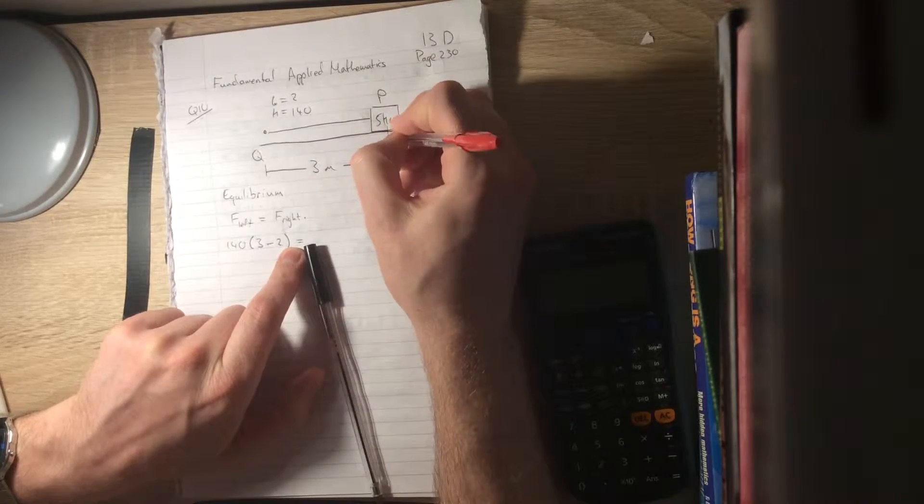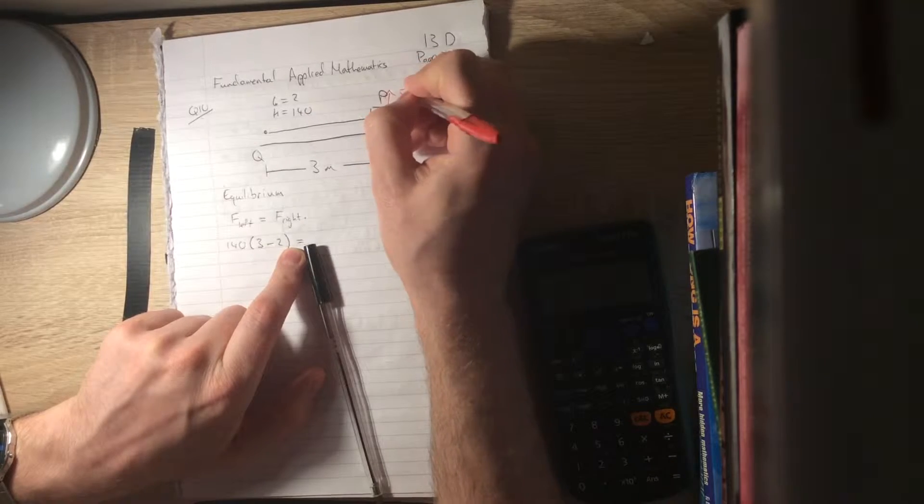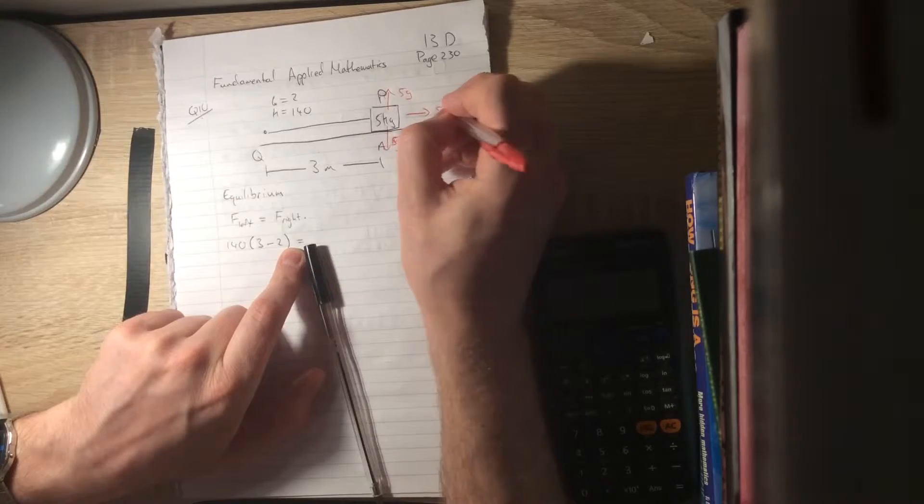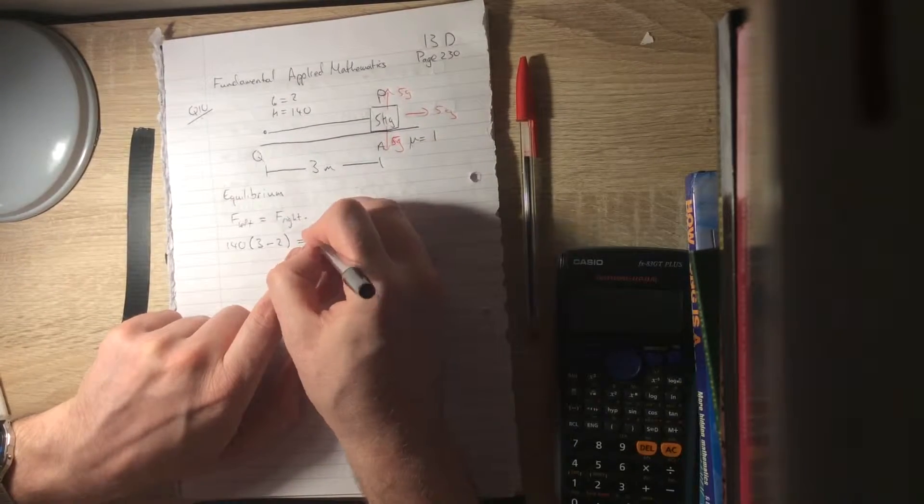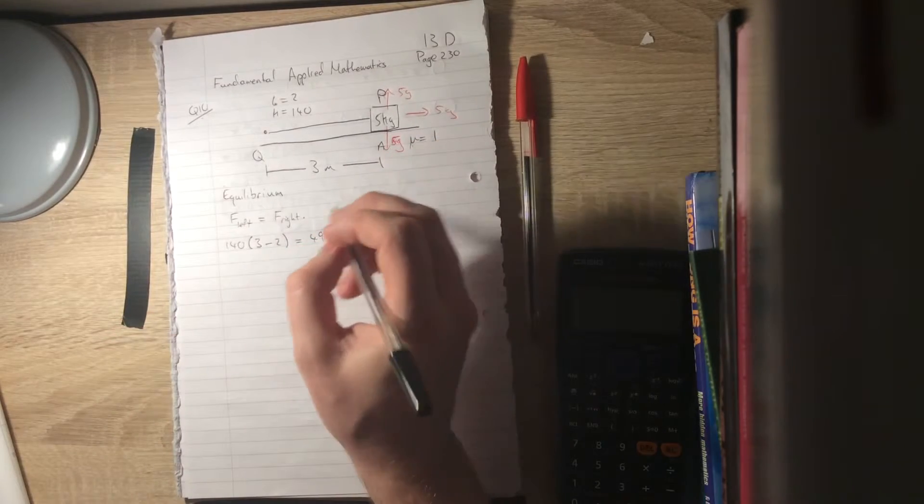So if this is experiencing mg downwards, then it's got a reaction force. So it's 5g down, reaction force of 5g up. And if the coefficient of friction is 1 times that reaction force, that's 5g. So that's going to be 49 newtons. 5 times 9.8 is 49 newtons.